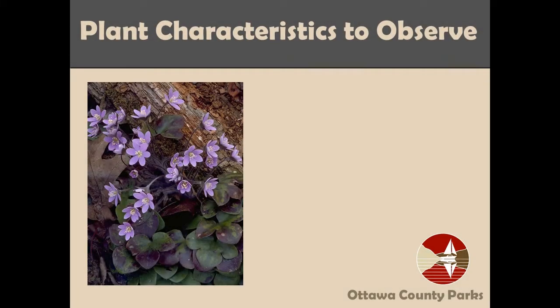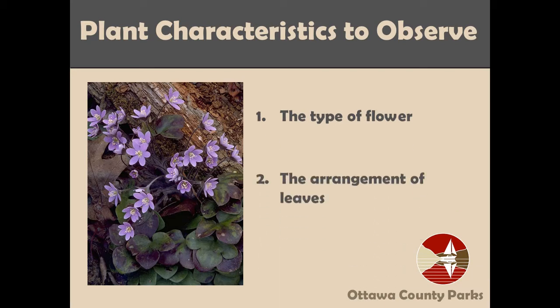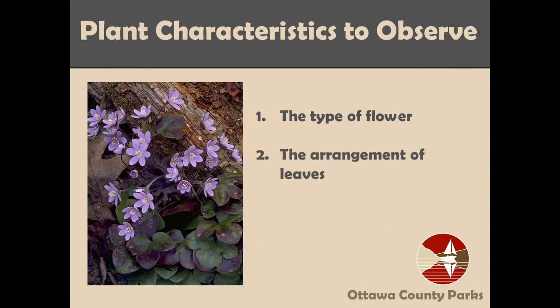The three characteristics are the type of flower, the arrangement of leaves, and the leaf margin. Let's look at the flower first.